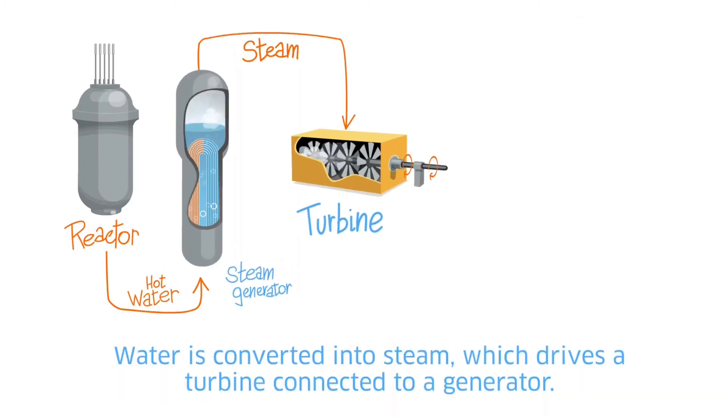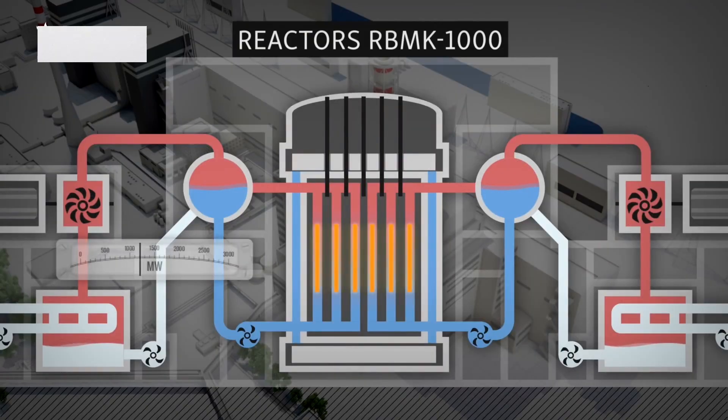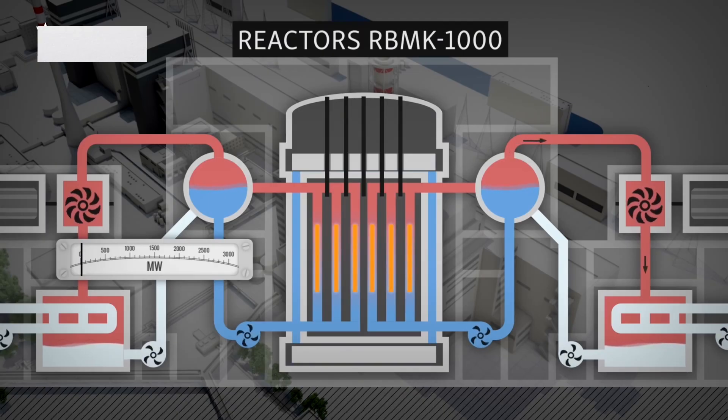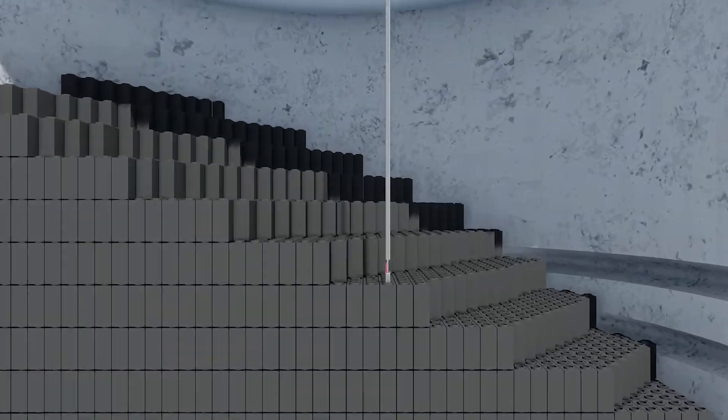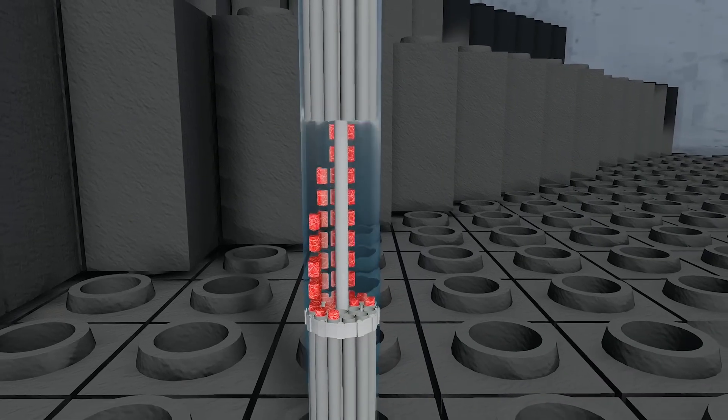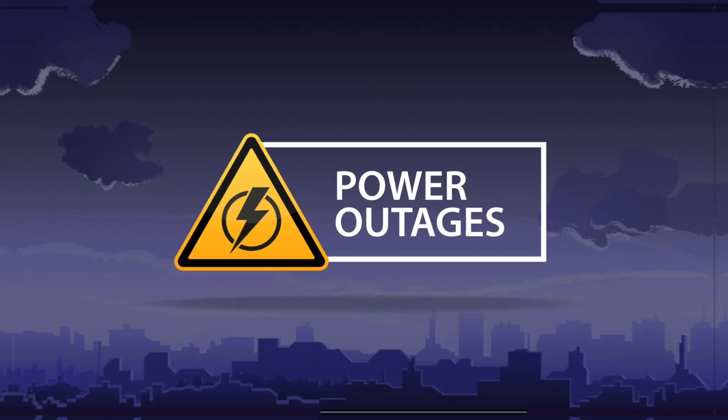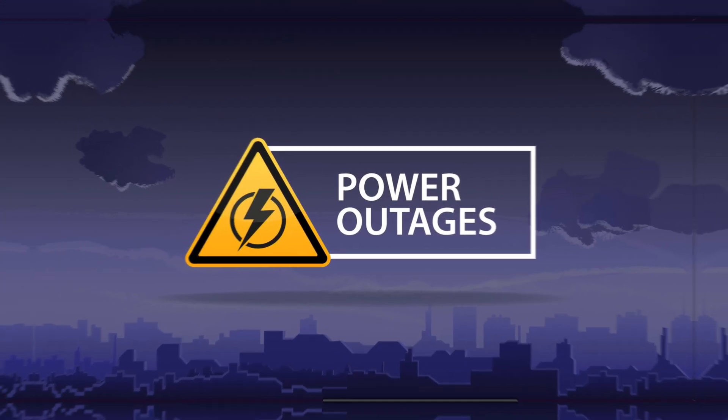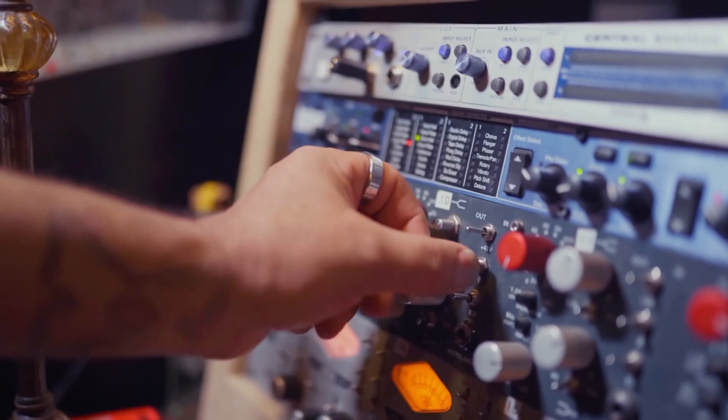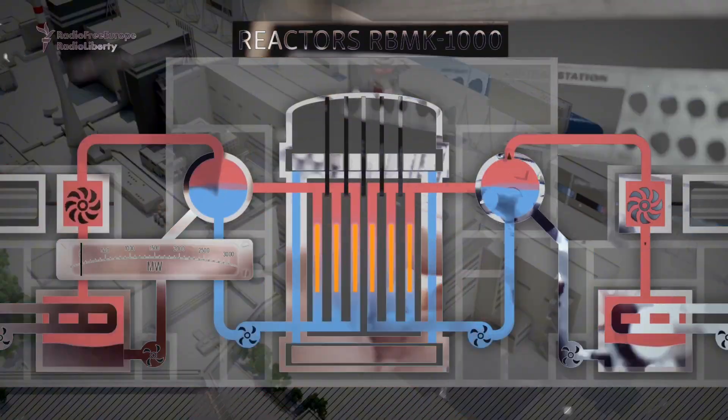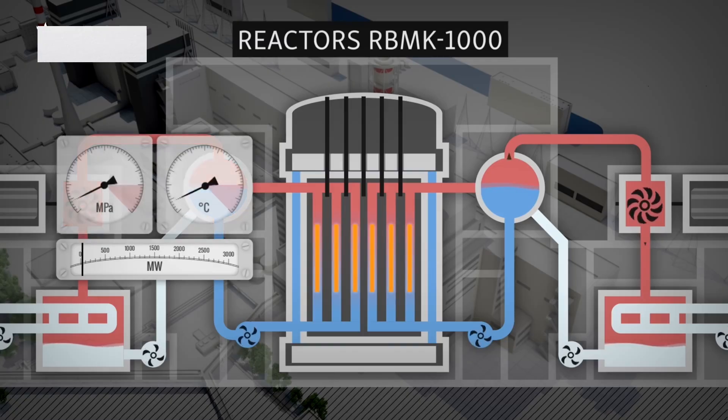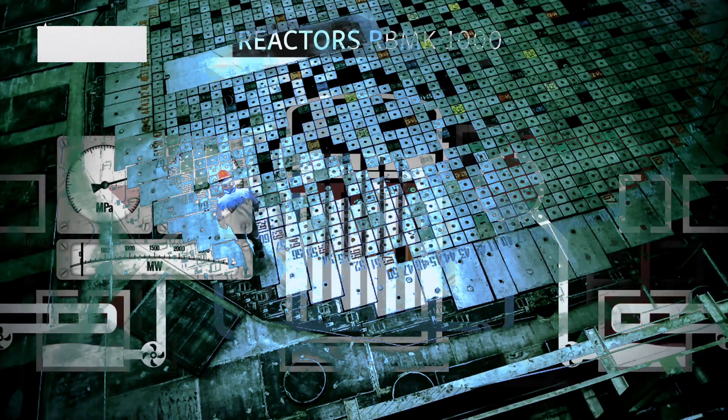This steam turns turbines, which generate the electricity that powers cities and factories. Our plant used an RBMK reactor, a Soviet design that was powerful and cheap, but also had hidden dangers that Western reactors didn't. This reactor used graphite blocks to slow down neutrons and water to cool the core. That night, we were running a safety test. It was designed to check if the cooling water pumps could keep running during a power outage. If those pumps stopped, the reactor would overheat. The test simulated a sudden power loss to see if the backup systems could keep the pumps running until power was restored. But to run the test, the reactor's power had to be lowered to an unstable and dangerous level. This made controlling the reactor very difficult.